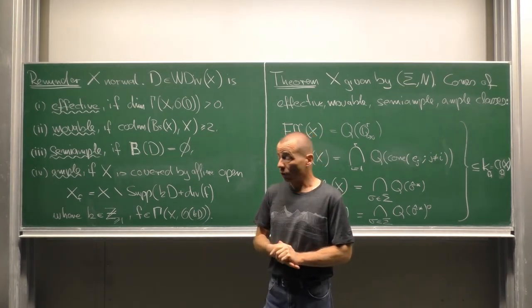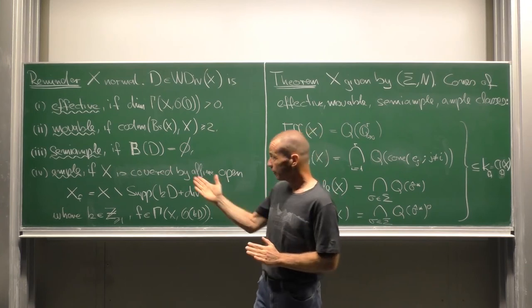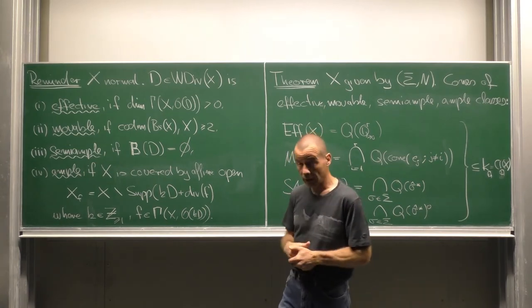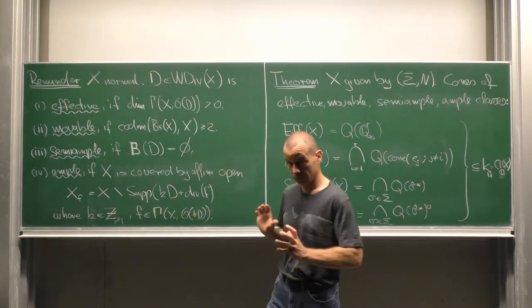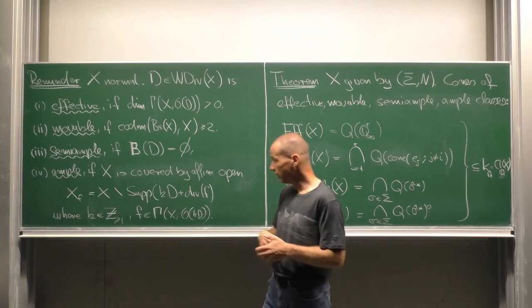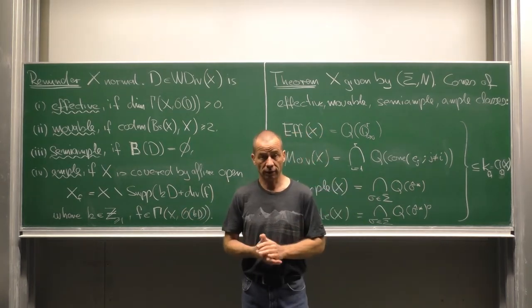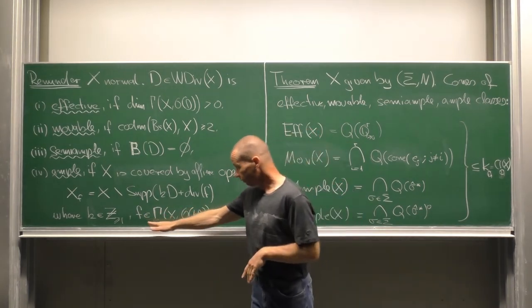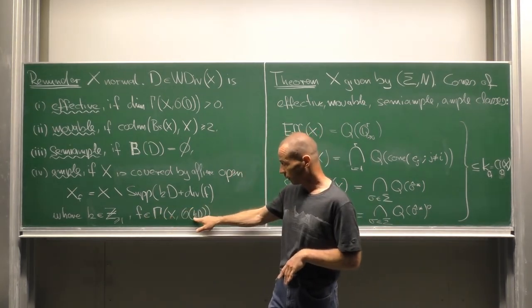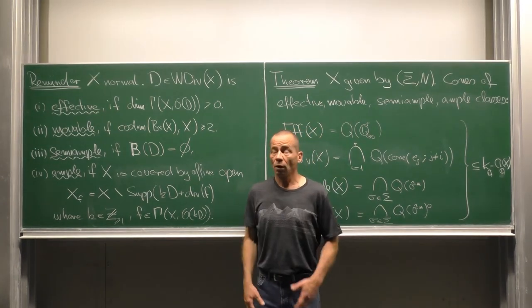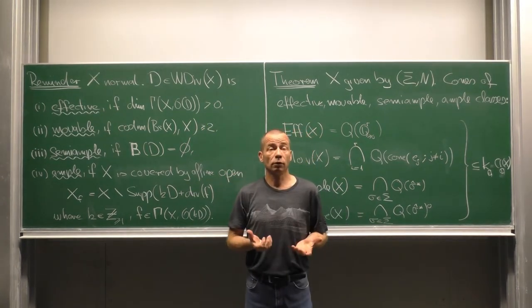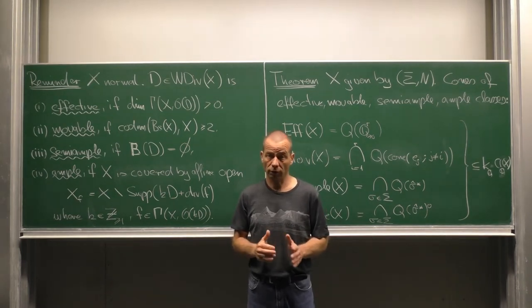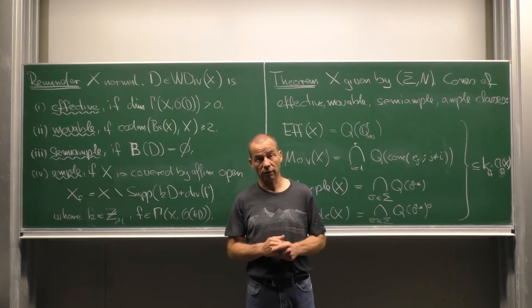It is called semi-ample if its stable base locus is empty. Finally, D is called ample if x is covered by affine open subsets of the form x_f equal x minus the support of kD plus divisor f where k is a positive integer and f is a section of the divisor kD. The classes of these divisors of various types generate cones in the rational vector space associated with the divisor class group.